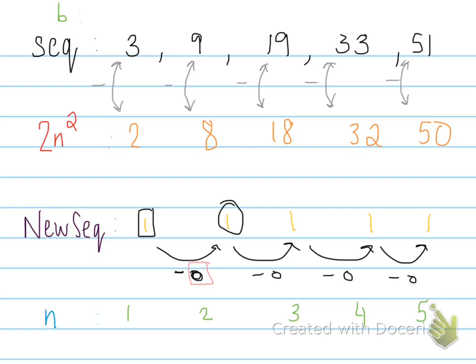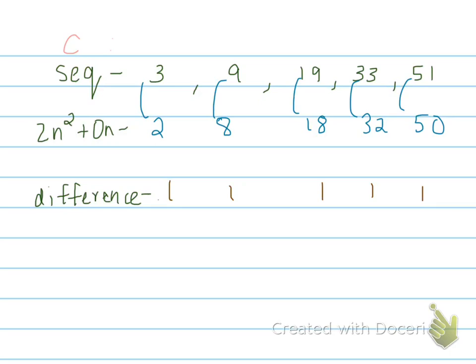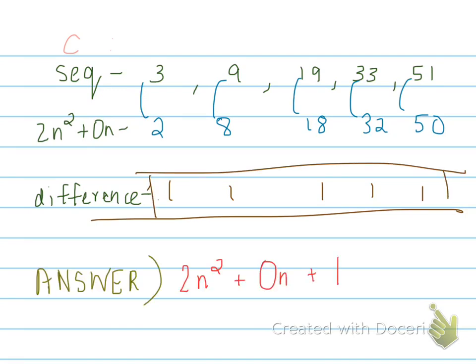So far the sequence is 2n² + 0n. To find 'c', we substitute: 2 × 1² + 0 × 1 = 2, then 8, 18, 32, and 50. We then find the difference between these values and the new sequence from step b, and we get 1. That difference is your 'c' value. So the final answer is 2n² + 0n + 1, or simply 2n² + 1.